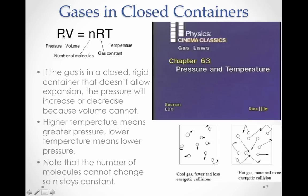So we just talked about volume, but there's another variable here with increasing temperature to look at, or changing temperature, and that is pressure. So if we have a system where we can't have expansion, if we have a closed rigid container that can't expand and the volume can't increase, then what will happen is the pressure will increase or decrease because the volume cannot. Higher temperature means a greater pressure.